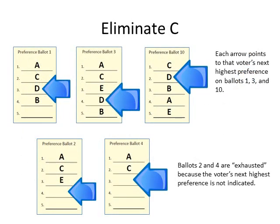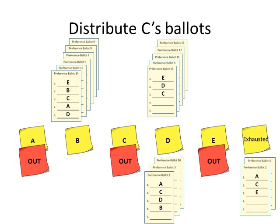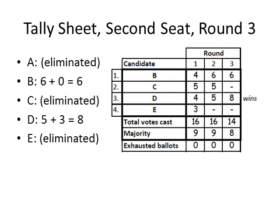Inspecting the five ballots in the stack for C, we see that the voter's next highest preference on ballots 1, 3, and 10 is D, and the voter's next highest preference on ballots 2 and 4 is not given. So we put ballots 1, 3, and 10 below the sticky note for D, and we put ballots 2 and 4 in the exhausted stack. The ballots below the sticky notes are counted and added to the number in the previous column of the tally sheet. B received no additional votes, so his vote total for this round remains at 6. D received three additional votes — 5 plus 3 is 8. The votes are totaled and a majority is computed. Candidate D received a majority of the votes cast and is the winner of the second seat.